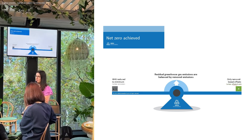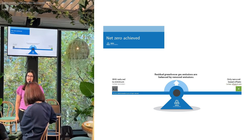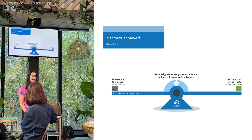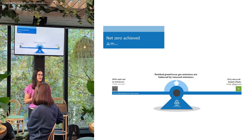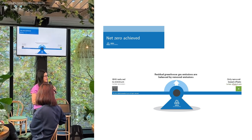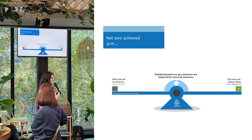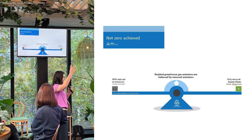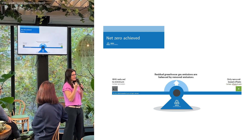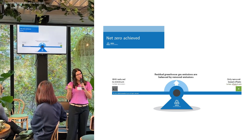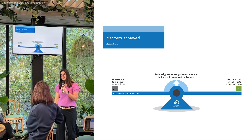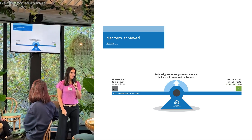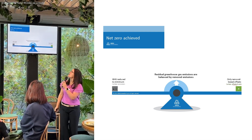But the carbon offsets have to be removal-based carbon offsets — projects that suck out the carbon that we've needed to offset previously, such as, for instance, through trees.